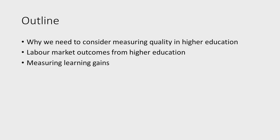I'm going to talk about two ways that are currently being considered or used to measure quality in higher education. They both have major limitations. First, we can think about what higher education does for students — how it influences their outcomes, and particularly whether getting a good job is a sensible mark of quality. But I'll also make the case that we need to think about the learning that goes on in higher education, since that is what our institutions are primarily there for.